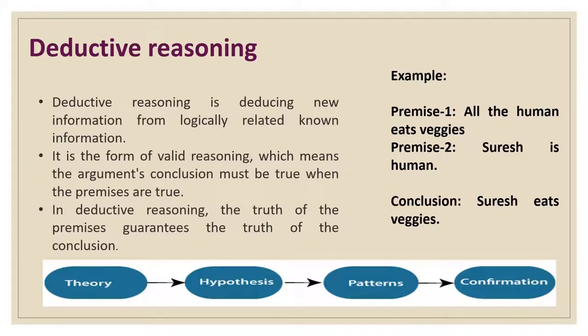Here is an example: the first premise is all humans eat veggies, the second premise is Suresh is human, so we can come to a conclusion that Suresh eats veggies. This is how the general process of deductive reasoning works. The process starts with a theory, the theory becomes a hypothesis, the hypothesis converts into a pattern, and the pattern will be confirmed as an output.